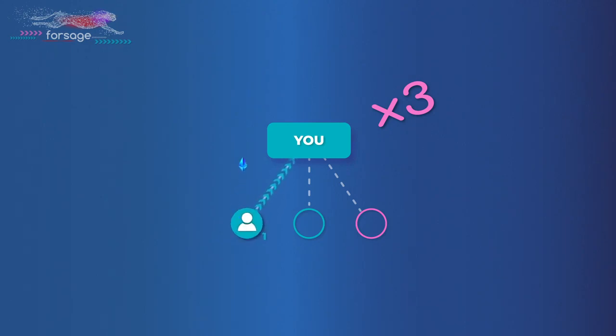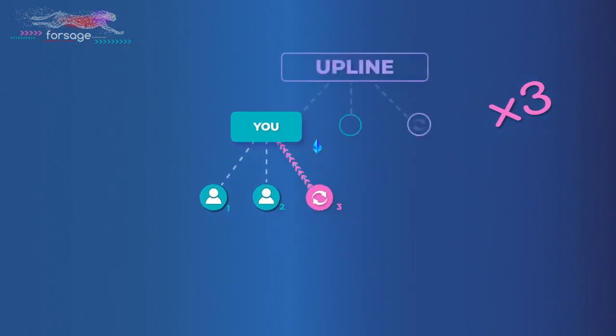The first partner takes a place below you. 100% payout instantly credited to your personal wallet. The second takes second place below you. Payment also instantly goes to your wallet. And when the third partner takes third place, you again receive 100% income, but in the form of reinvest.